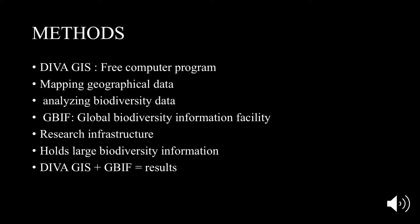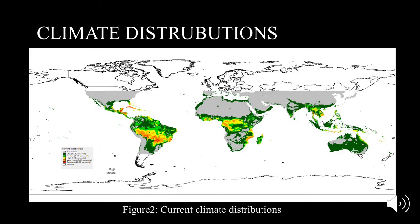I also used the Global Biodiversity Information Facility, shortly known as GBIF. This is a research infrastructure that holds large amounts of biodiversity information. By using DivaGIS and the data of GBIF, I was able to observe species distribution, specifically of the Carica papaya. Current distribution focuses on areas where climates are suitable for growth.